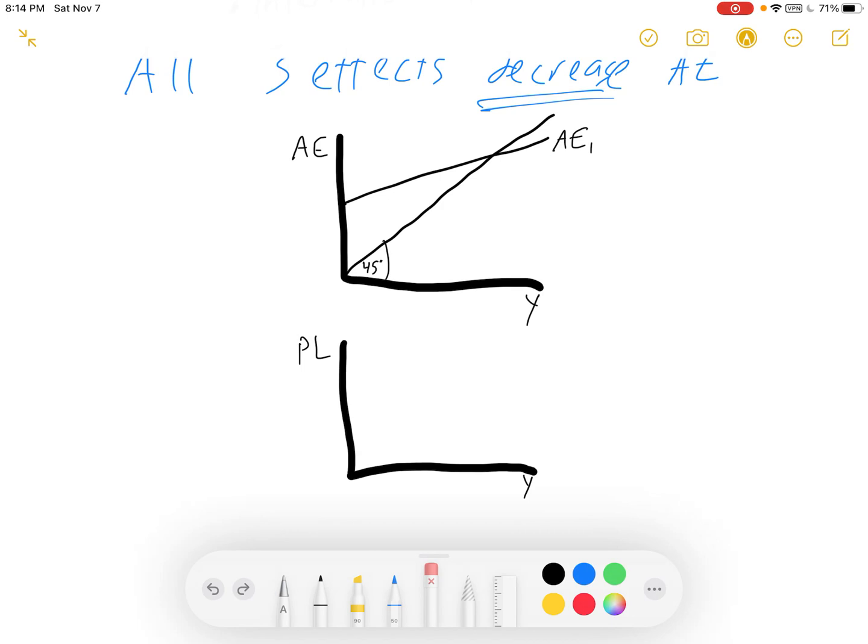There's a 45 degree line. Here's your aggregate expenditures line. And that equilibrium corresponds to this point here. Some low price level and that level of GDP.